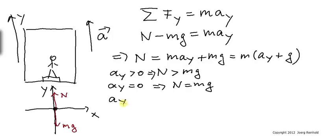Should ay be less than zero, that means the elevator is accelerating downward. Then the normal force and the reading of the scale is less than the weight.